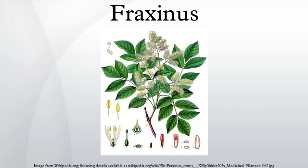The tree's common English name, Ash, goes back to the Old English 'aesc', while the generic name originated in Latin. Both words also meant 'spear' in their respective languages. The leaves are opposite and mostly pinnately compound, simple in a few species. The seeds, popularly known as keys or helicopter seeds, are a type of fruit known as a samara.